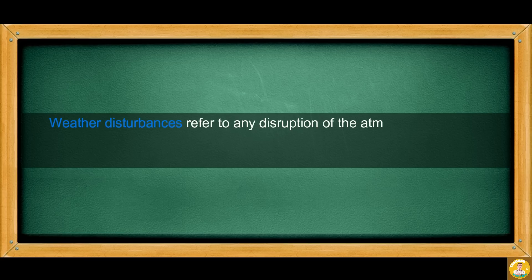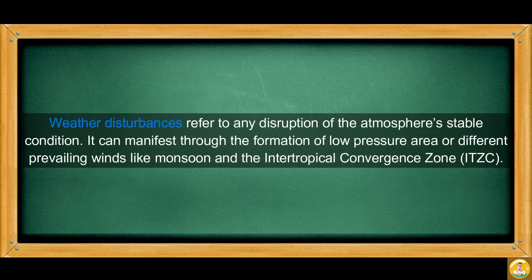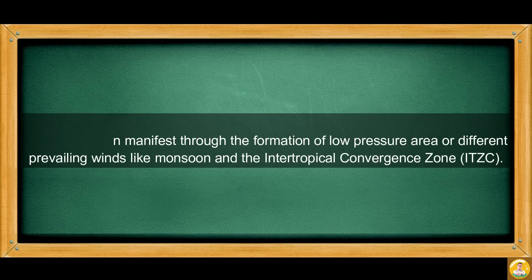When these factors change and affect the condition of the atmosphere, weather disturbances occur. Weather disturbances refer to any disruption of the atmosphere's stable condition. It can manifest through the formation of a low pressure area, or through different prevailing winds like monsoons and the Intertropical Convergence Zone, or ITCZ.